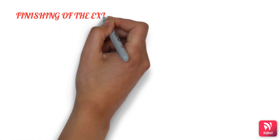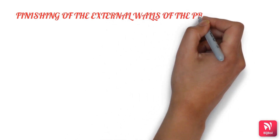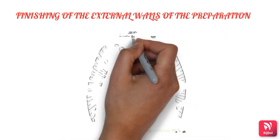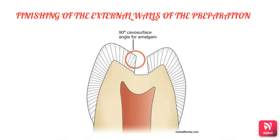The next step is the finishing of the external walls of the preparation. This involves the further development, when indicated, of a specific cavity surface design and degree of smoothness that produces maximum effectiveness of the restorative material used.